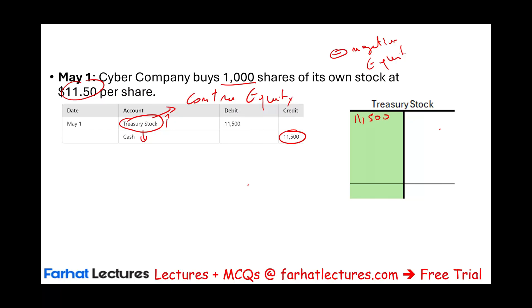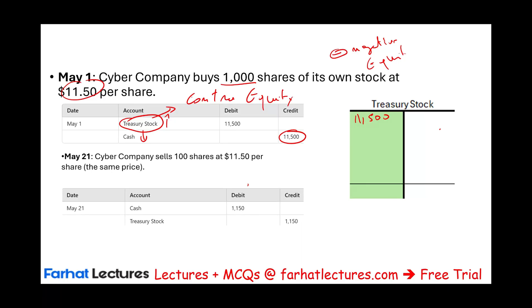For the second transaction — selling 100 shares at $11.50 — we receive $1,150 in cash. We debit cash $1,150 and credit treasury stock $1,150. Using the cost method, we always remove treasury stock at cost. After this transaction, the treasury stock balance is $10,350 ($11,500 minus $1,150). We bought at $11.50 and sold at $11.50, so there's no gain or loss.